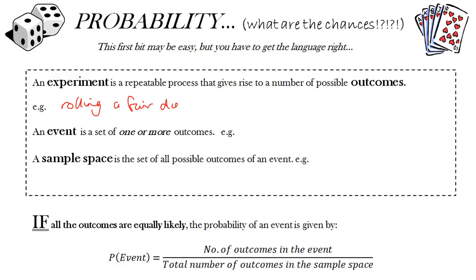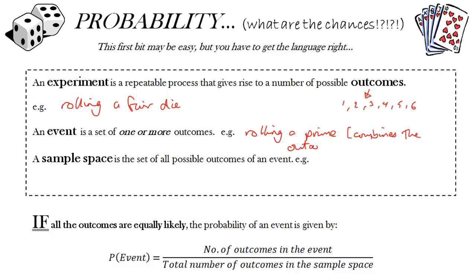You've got to learn some vocabulary. An experiment is something that you can do again and again and it gives you a number of possible outcomes. For example, if we roll a fair die, the outcomes are one, two, three, four, five, or six. An event could be just one outcome or a set of outcomes — for example, rolling a prime number.